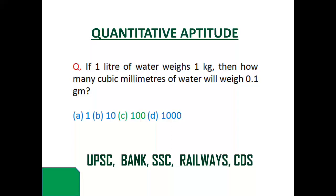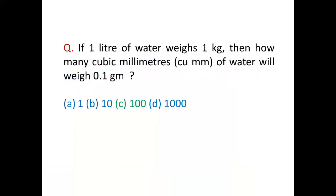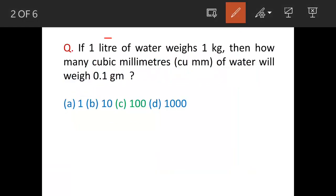We will see a question on mensuration about the volume of water and its weight. The question says: 1 liter of water weighs 1 kg — then how many cubic millimeters of water will weigh 0.1 gram? The answer is option C: 100 cubic millimeters of water is going to weigh 0.1 gram.